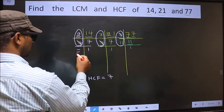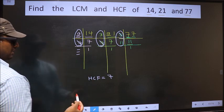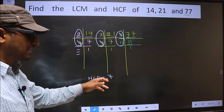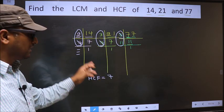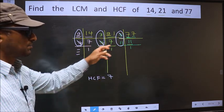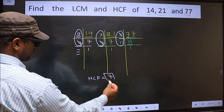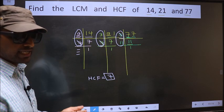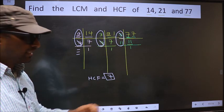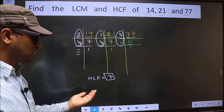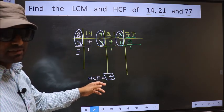No more numbers have been left. Therefore, we got only one number, 7, present in all the three places. So 7 itself is our HCF. I repeat, we got only one number, 7, present in all the three places. So 7 itself is our HCF.